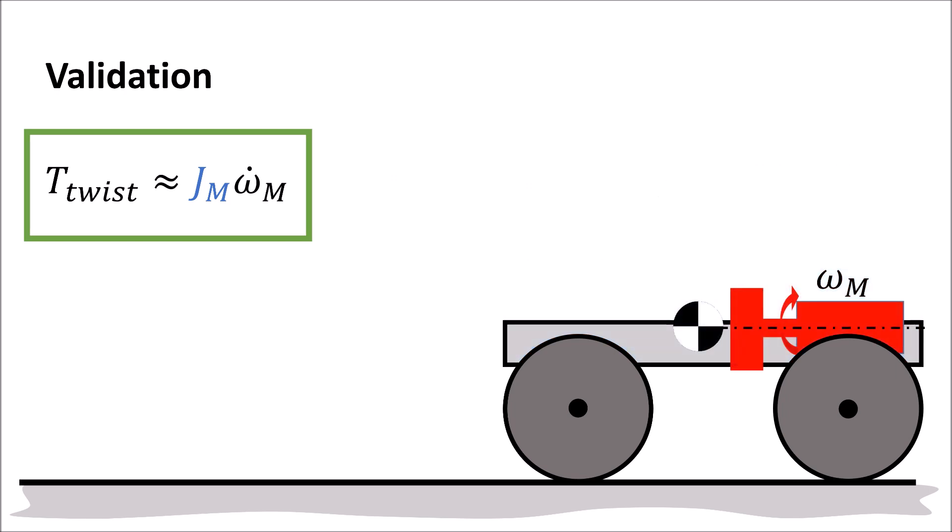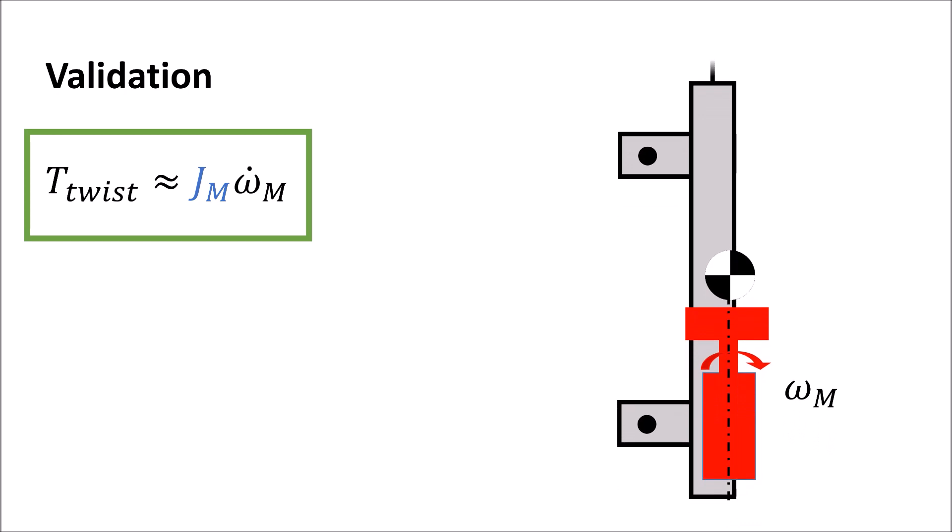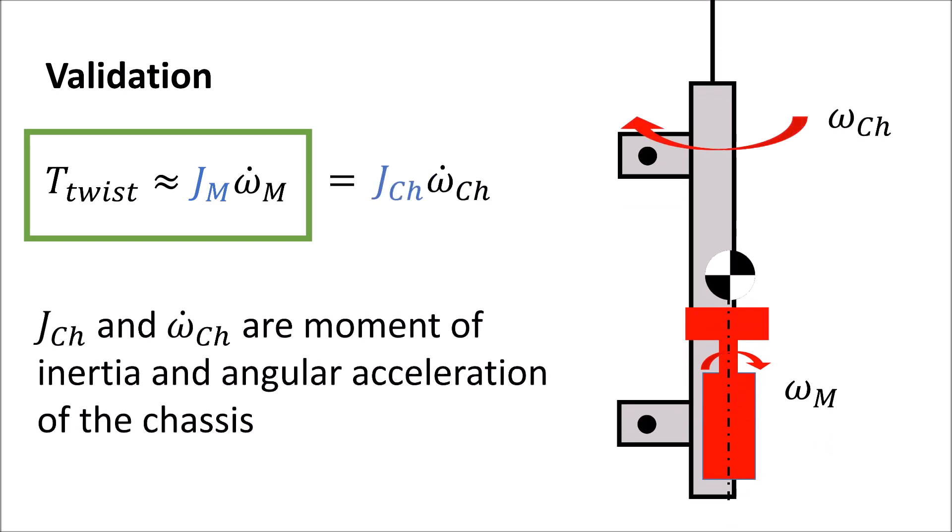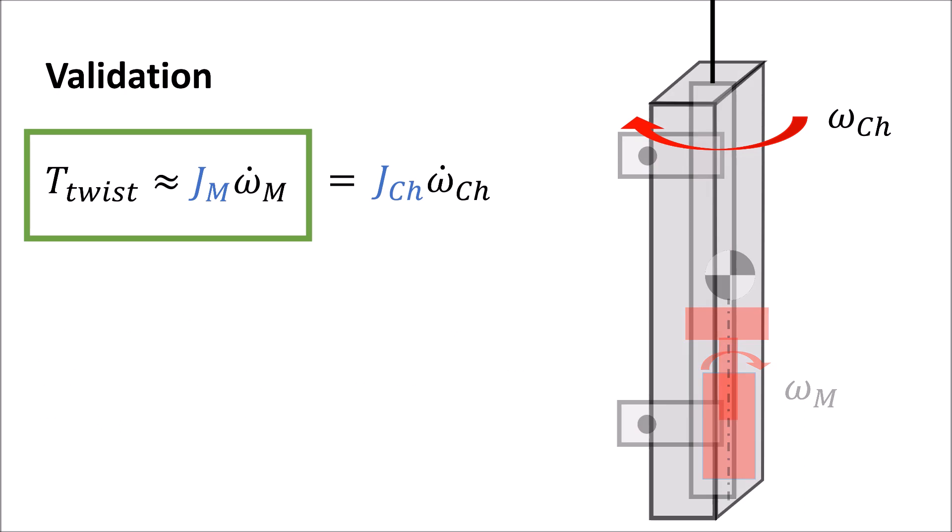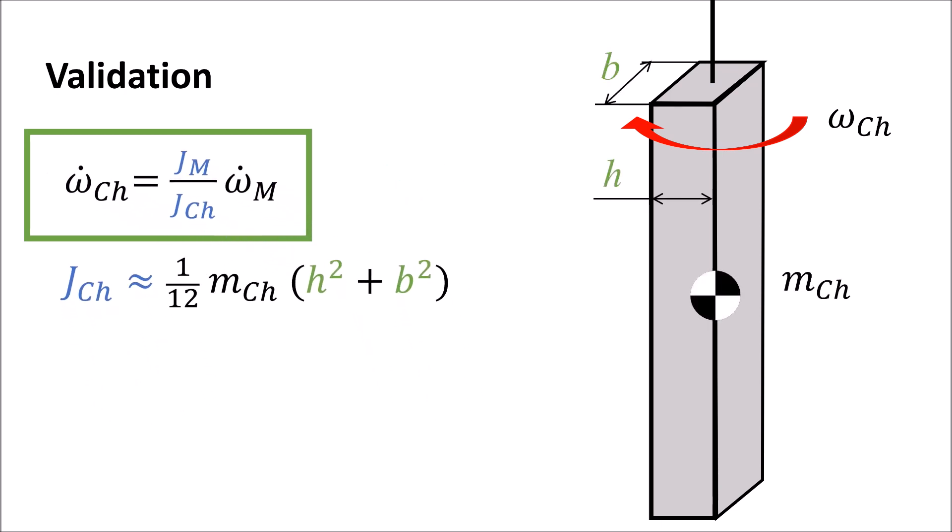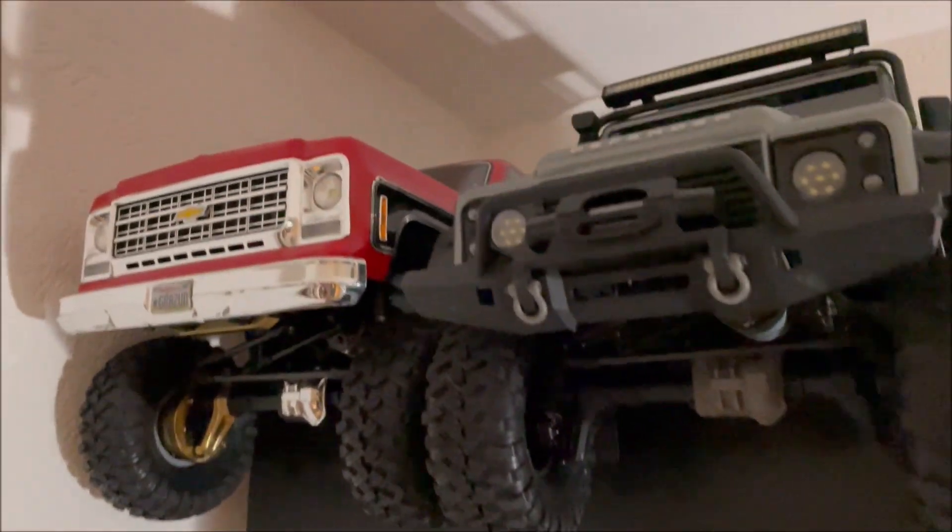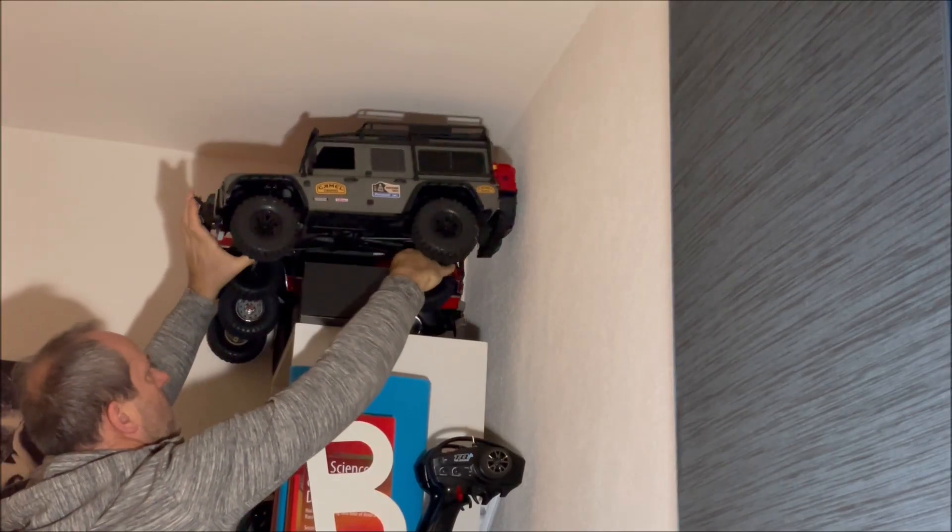This resulting formula can be validated with a vertically hanging chassis. The motor acceleration is inducing a counter movement of the chassis. The rotational acceleration of the chassis can be computed knowing the moments of inertia and the acceleration of the motor. We did the validation with one of our 1-10 crawlers, the Traxxas TRX-4 Defender.